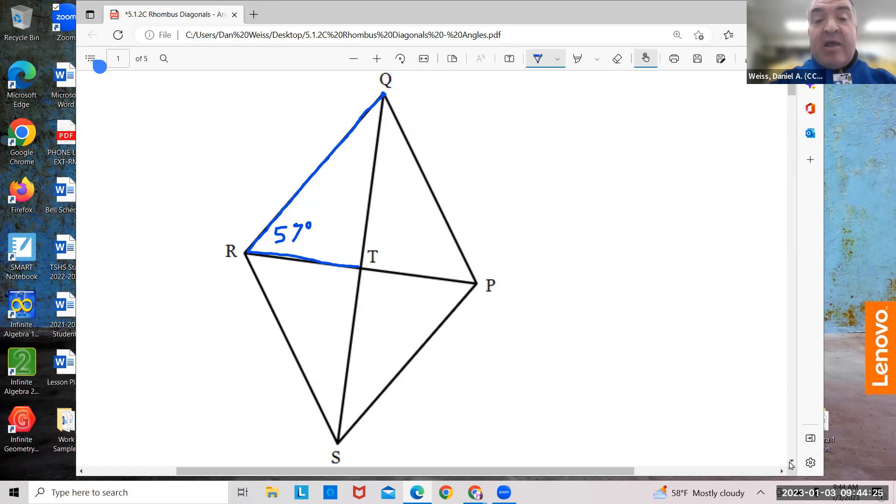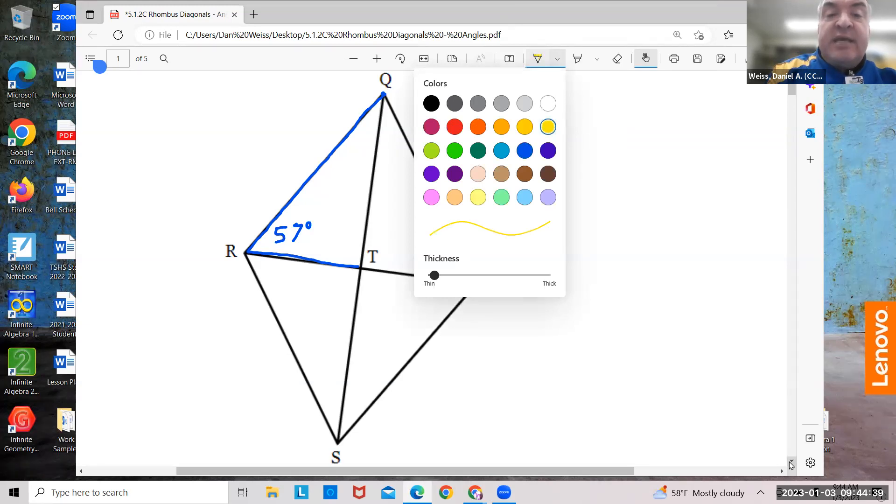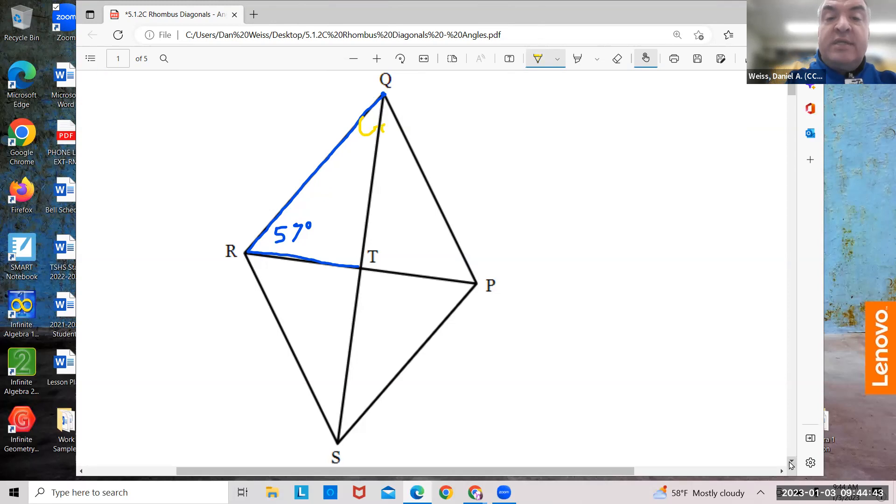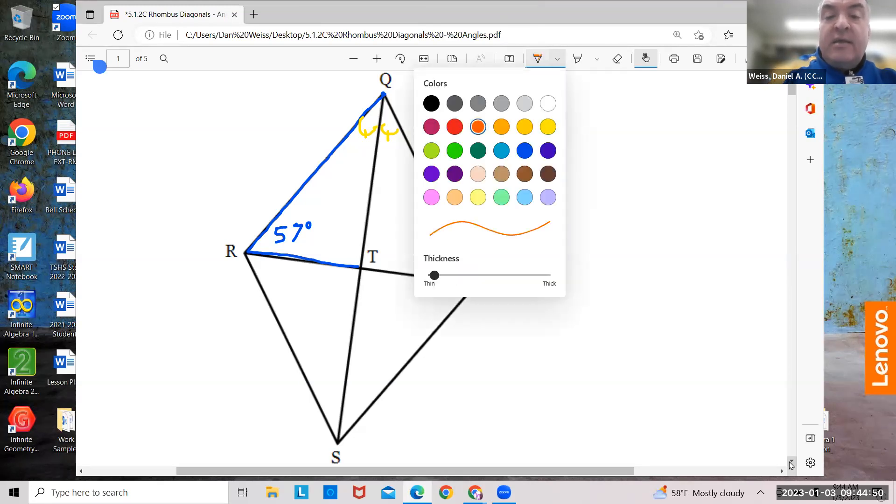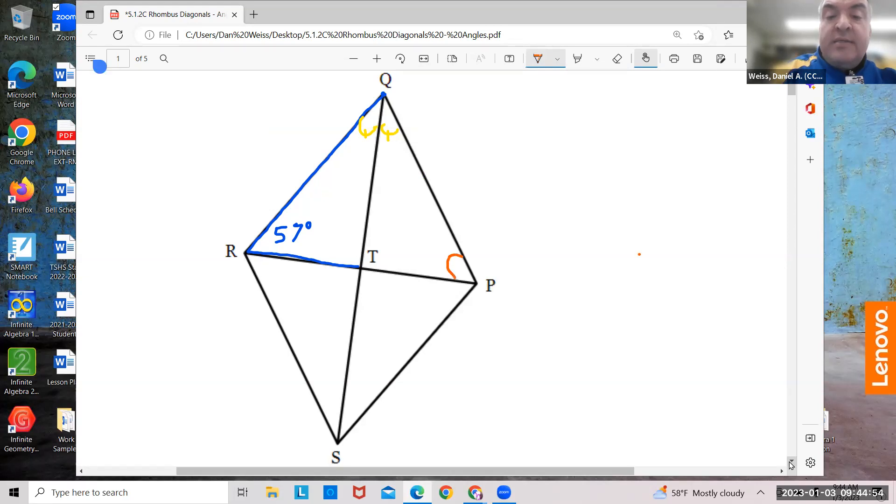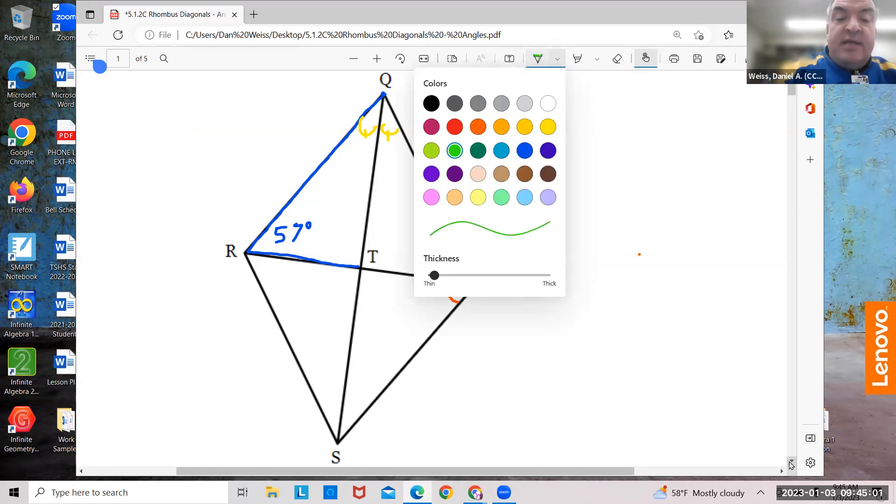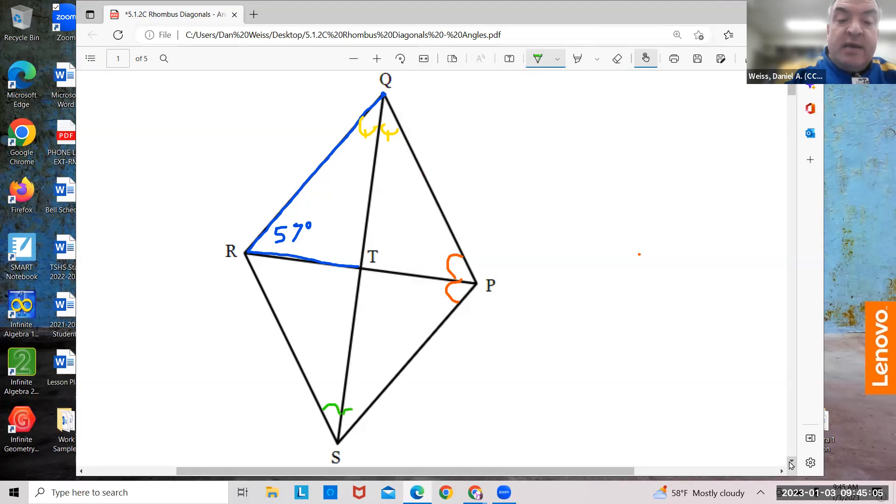Now, in a rhombus, the diagonals bisect the angles. What does that mean? That means this angle is equal to this angle. It means that this angle is equal to this angle. That means that this angle is equal to this angle. And it means that this angle is equal to this angle.